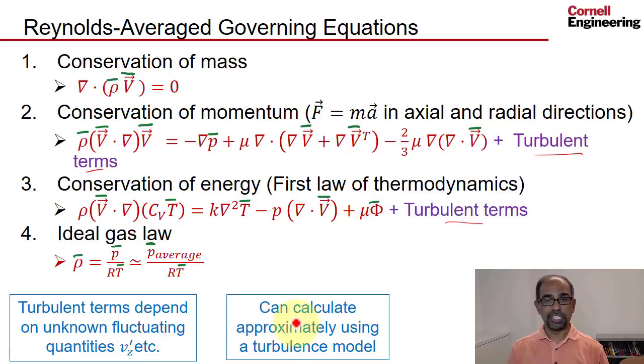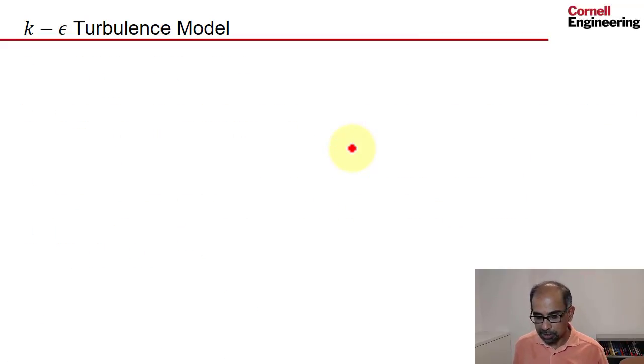What's done in turbulence modeling is you can calculate approximately these terms by relating them to the mean quantities using some kind of semi-empirical relations. A lot of this is inspired guesswork. They're useful, they have problems, and we'll use one particular type of turbulence model, the k-epsilon turbulence model, which is used a lot in engineering. Despite having problems, it can give us useful results and it does in this case.